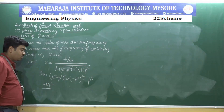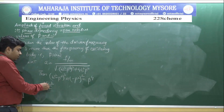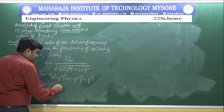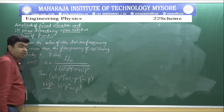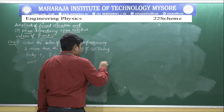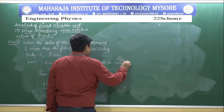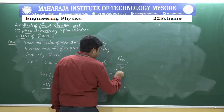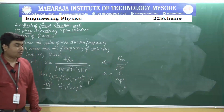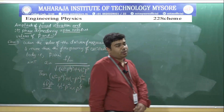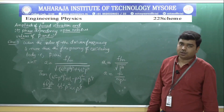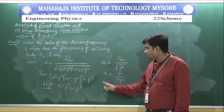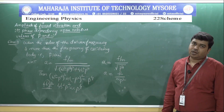Since the damping factor b is small, 4b squared p squared is less than p to the power of 4. Therefore the amplitude simplifies to: a = F/m divided by p squared. So when the driven frequency is much greater than the natural frequency, the amplitude is given by a = F/(m * p squared).